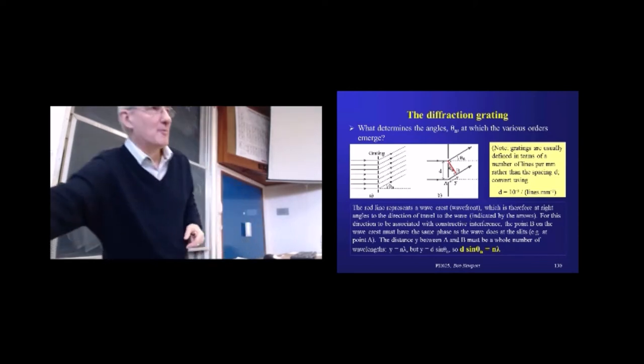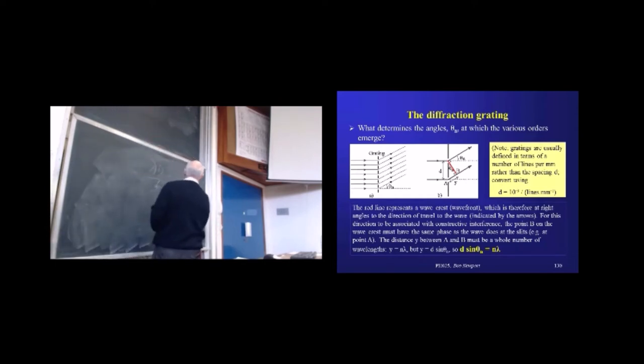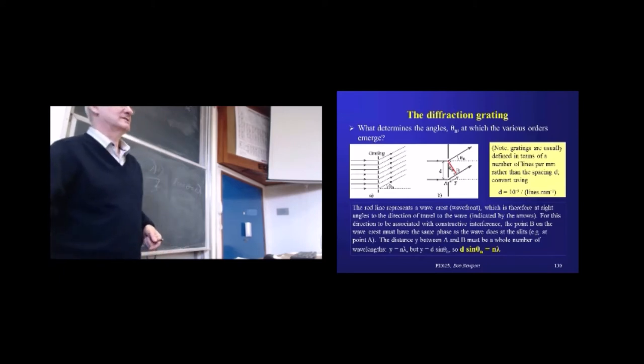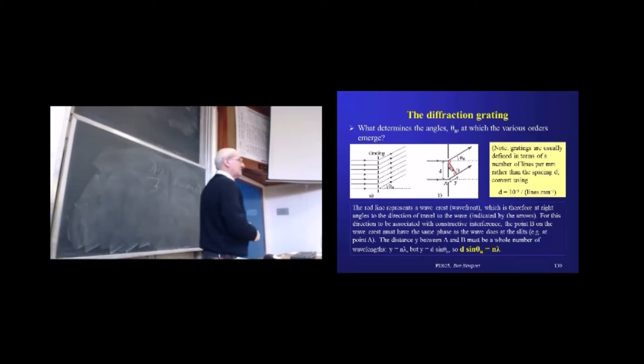So we move from Bragg's diffraction equation, which is one that's on the board now, to our transmission diffraction grating equation. We're just losing that factor of two. So this angle now is the angle associated with whatever order of bright fringe it is we're looking at on the other side.